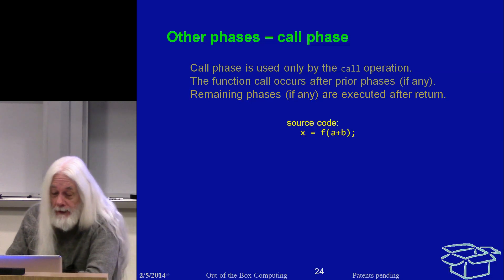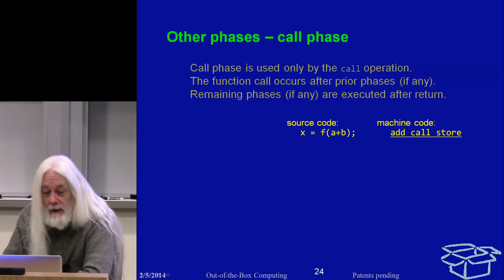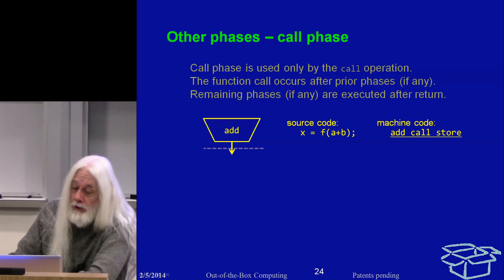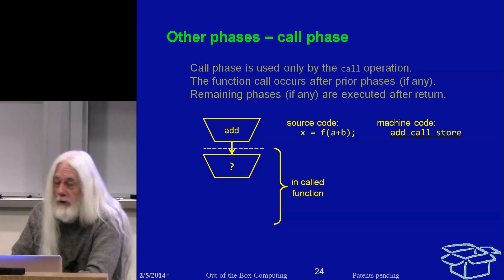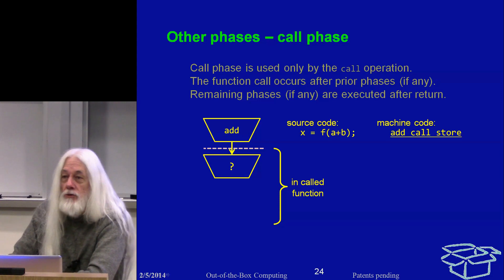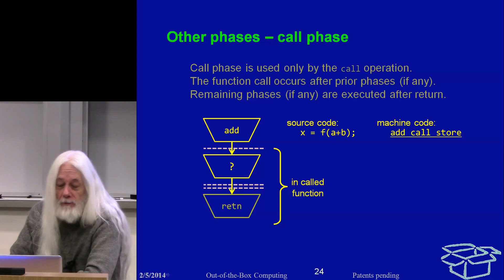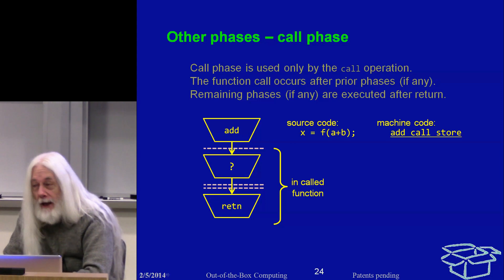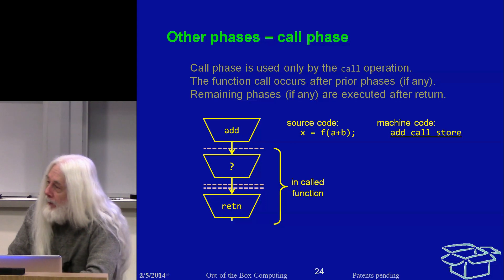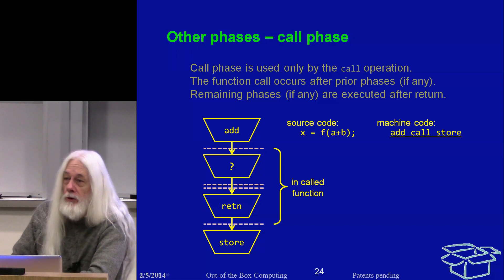If the source code has a function call, the machine code will be add, call, and store — all one instruction. The add feeds the called function, so the result of the add is passed directly into the callee with only a cycle boundary in between. The callee executes some number of cycles — whatever that function does — and eventually executes a return. It then exits, crossing a cycle boundary, and we're back in the original instruction, directly able to store the result of the function call.